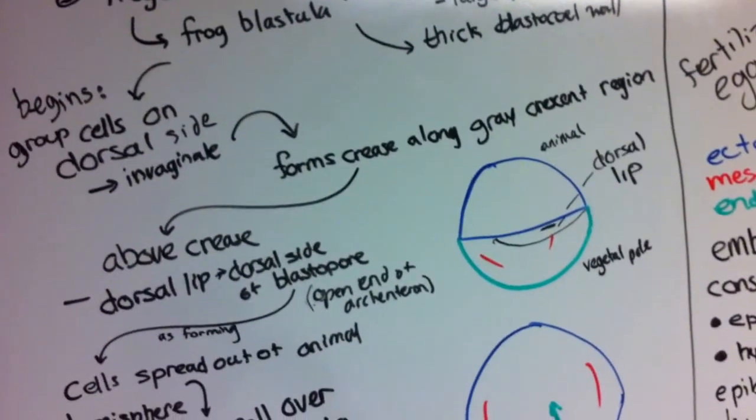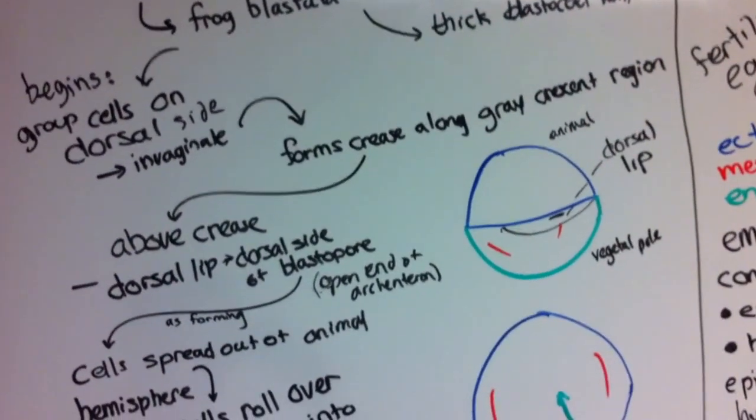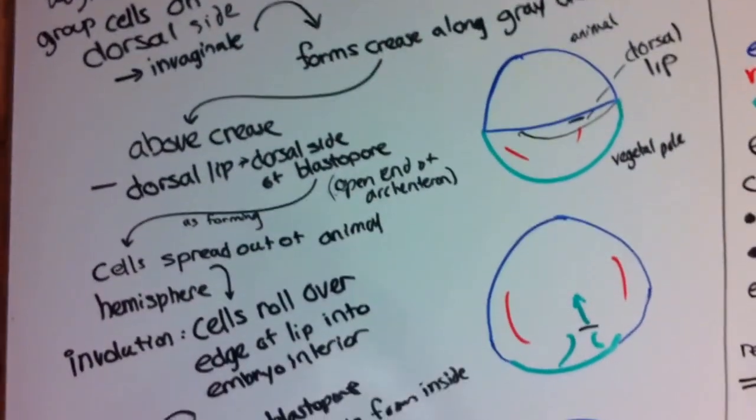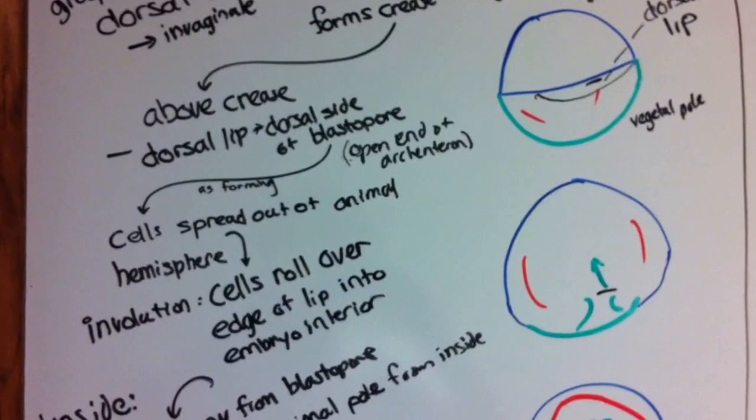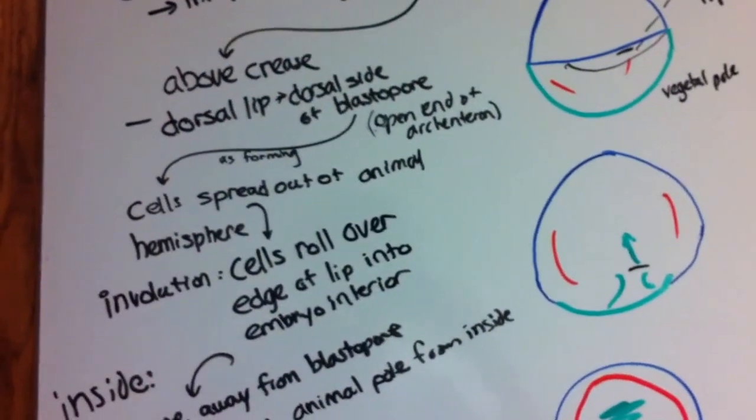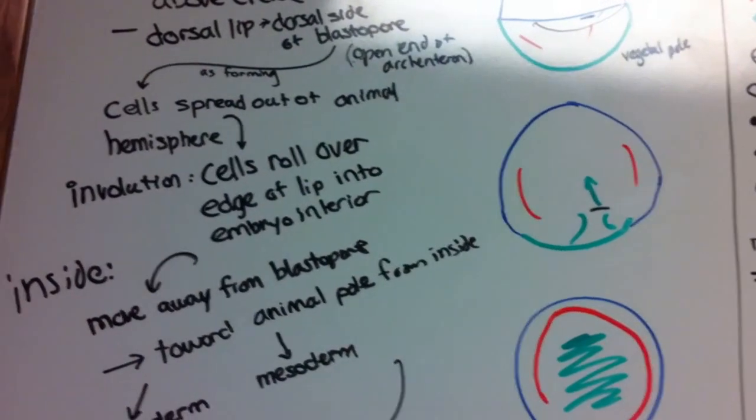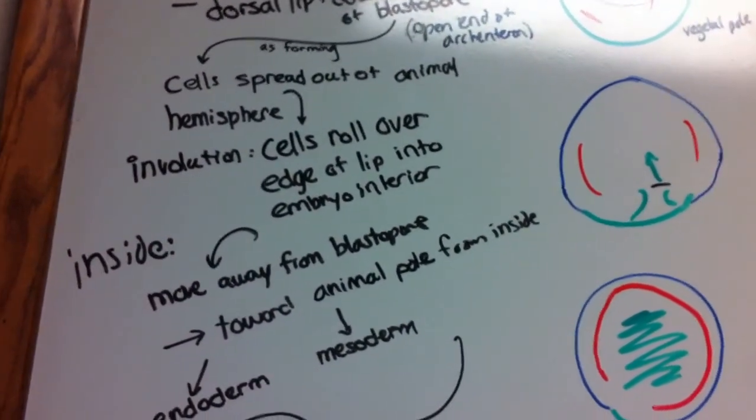The blastopore, in review, is the open end of the archenteron. As the blastopore is forming, cells will start to spread out of the animal hemisphere. This starts a process we call involution. In involution, cells roll over the edge of the lip into the embryo interior.